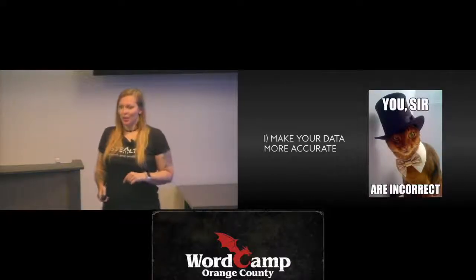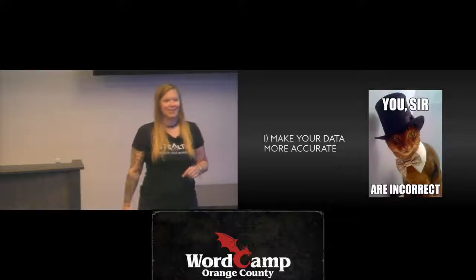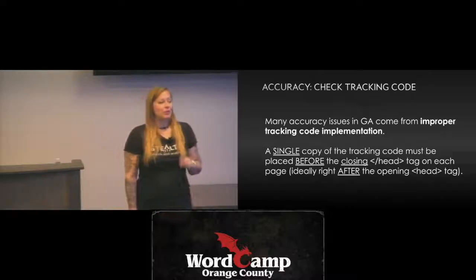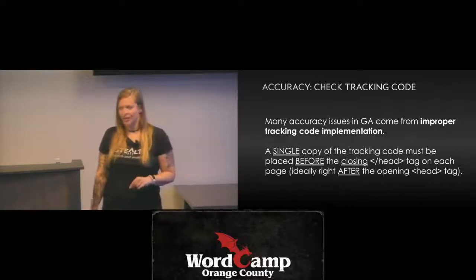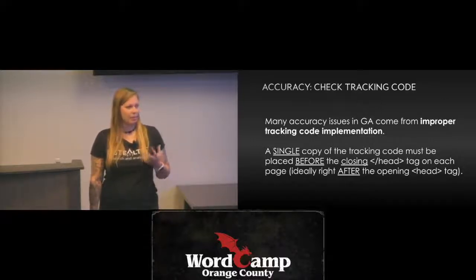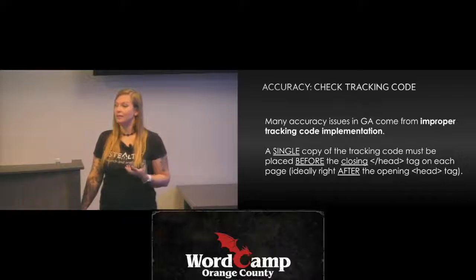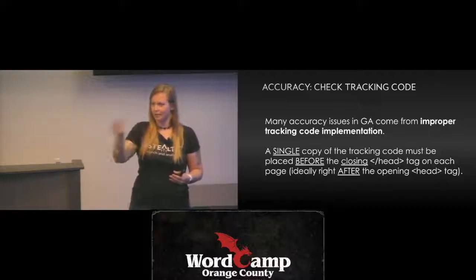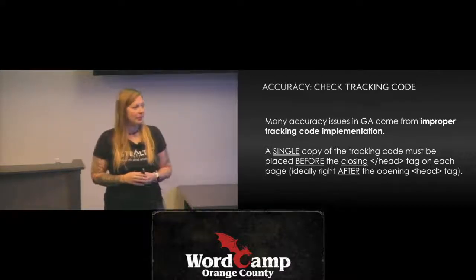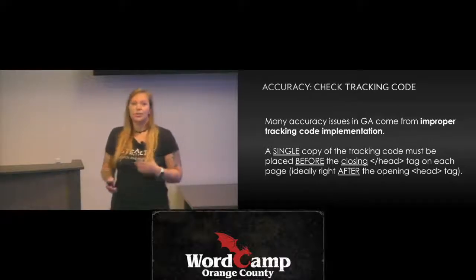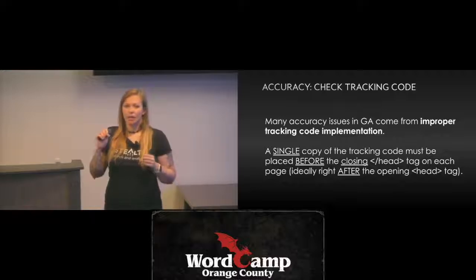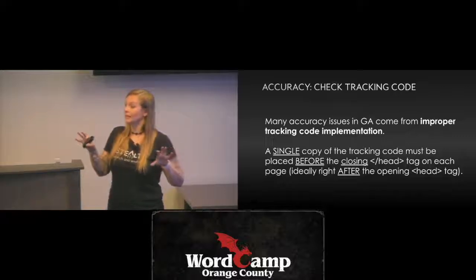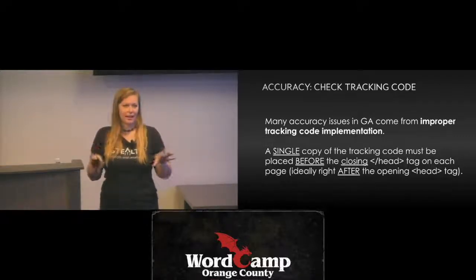Let's dive into how to make your data more accurate. First and foremost, always check your tracking code implementation. One of the most common reasons for inaccurate data in Google Analytics is incorrect tracking code implementation. It seems easy enough to just set up a Google Analytics account, take the tracking script, and put it on the site. But if you do that in the wrong place, it can result in inaccurate data. Sometimes a web developer manually adds the code and then someone else uses a plugin to add the code again, and you end up with two sets of tracking code — that can cause problems.